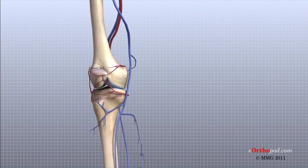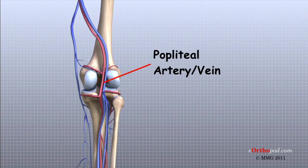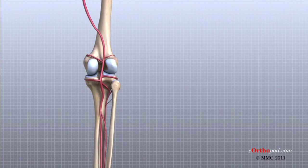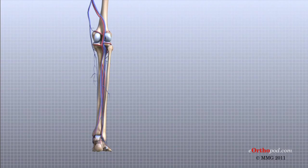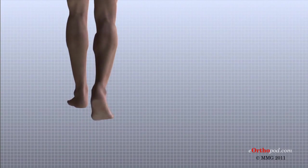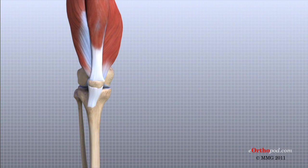The major blood vessels around the knee travel with the tibial nerve down the back of the leg. The popliteal artery and the popliteal vein are the largest blood supply to the leg and foot. If the popliteal artery is damaged beyond repair, it is very likely the leg will not be able to survive. The popliteal artery carries blood to the leg and foot; the popliteal vein carries blood back to the heart. The knee has a somewhat unstable design, yet it must support the body's full weight when standing and much more than that during walking or running. So it is not surprising that knee problems are a fairly common complaint among people of all ages. Understanding the basic parts of the knee can help you better understand what happens when knee problems occur.